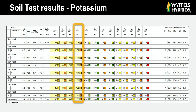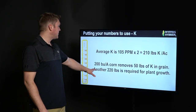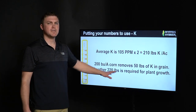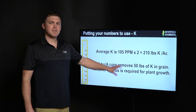The next thing I like to look at is potassium. Going right to the bottom, the average is 105 parts per million for this particular field. We can do those same calculations: 105 ppm times two gives us 210 pounds of actual K per acre. A 200 bushel per acre corn crop removes 50 pounds of that when you haul the grain off. However, potassium in particular is important for cell wall structure and stress regulation, so we actually need another 220 pounds required just for normal plant growth. A lot of that 220 will get returned to that acre when the stover and plant material is incorporated, but it still uses it during the growing season.